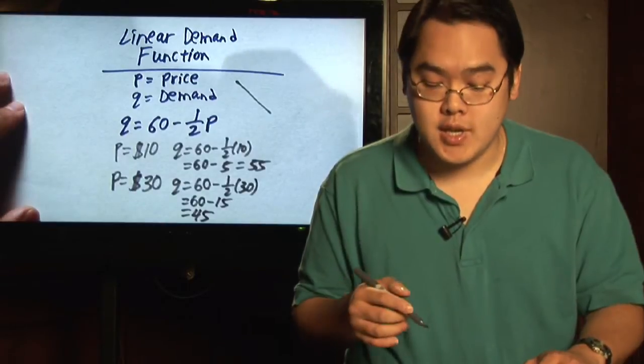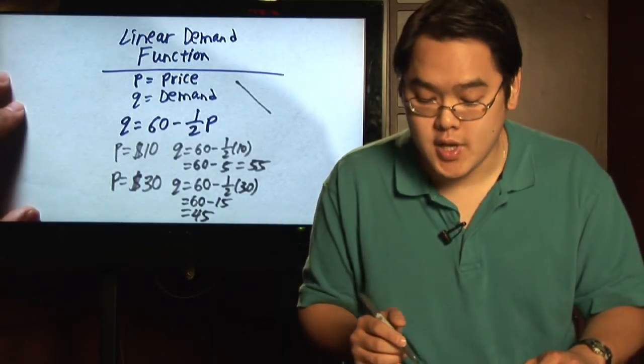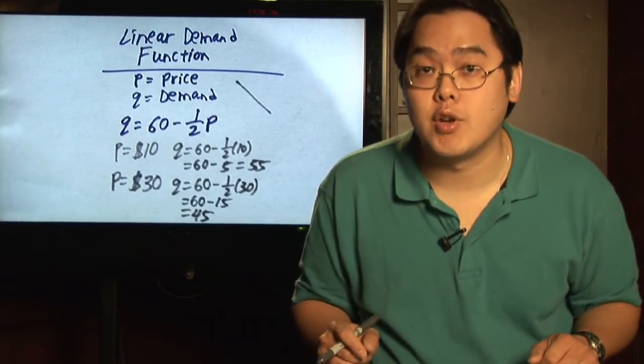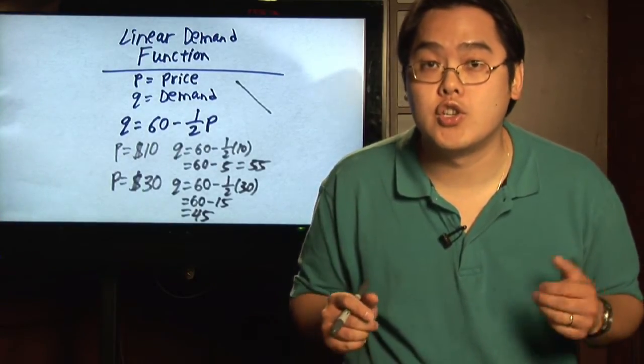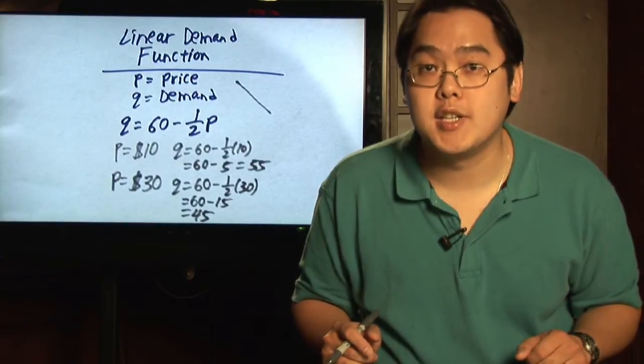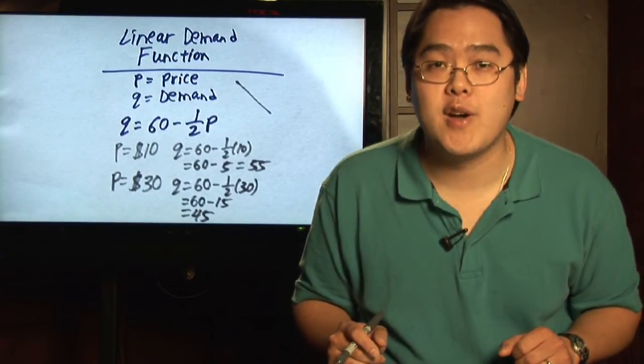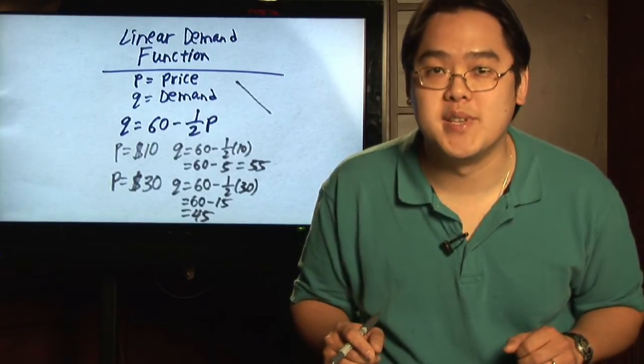So when the price is tripled in this particular instance, the number of items decreased by 10. Typically that's pretty normal because the more you charge for your price, the less the demand, but there are many other demand functions out there, but linear demand functions are a good foundation to understand this aspect of business.